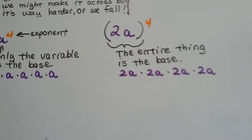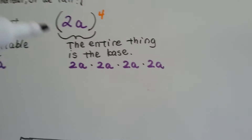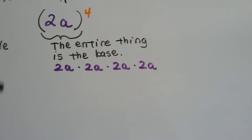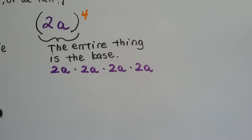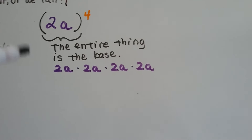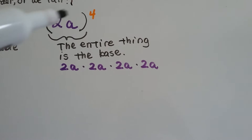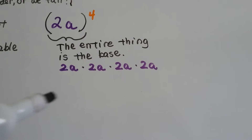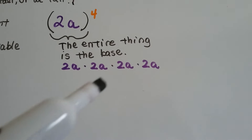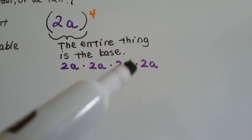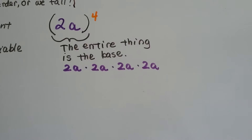If we see it in parentheses, that means the entire thing is the base. The 2a is now the base together. So it means 2a times 2a times 2a times 2a.